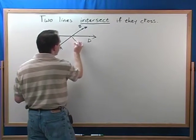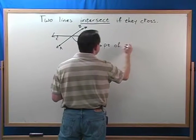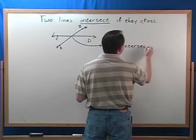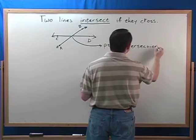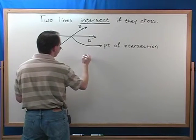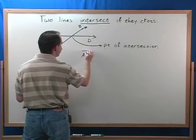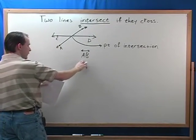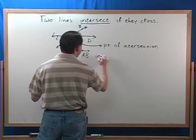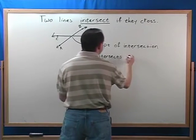So this point right here is the point of intersection. This is the point of intersection, and if we were going to write this down like for an answer to a test, we would say that line AB intersects line CD.